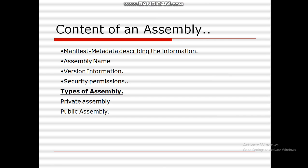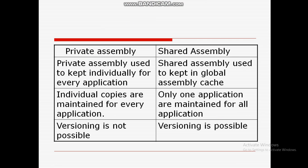The two types are private assembly and public (shared) assembly. For private assembly, individual copies are maintained for every application. For shared assemblies, only one copy is maintained for all applications. Versioning is not possible in private assembly, but versioning is possible in shared assembly.